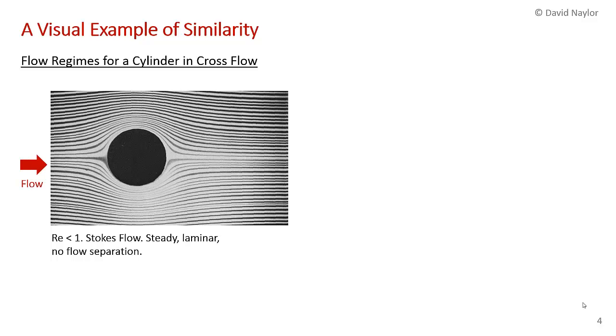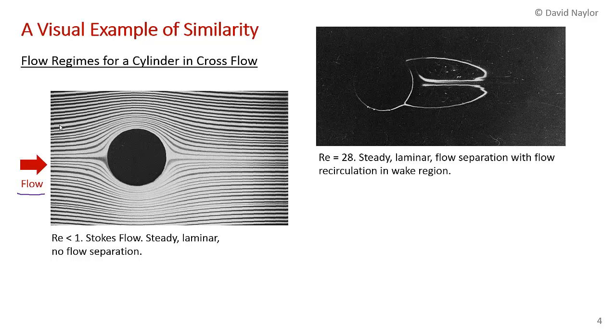In this picture the flow is from left to right. As the Reynolds number increases, when you get substantially above one, you get flow separation. This picture is taken at a Reynolds number of 28. There's been a little bit of smoke introduced into the flow, and we can see the streamlines here because this is a steady flow.